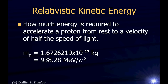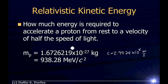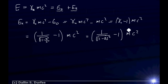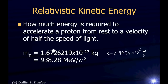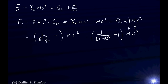We can either plug in the mass in kilograms and put in c — which is 2.9979 × 10⁸ meters per second — and get the answer in joules, since kilograms times meters per second squared is joules. Or alternatively, we can plug in the mass in MeV/c² and the c² cancels, giving the answer directly in mega-electron-volts. So all that's left is to plug in the numbers.